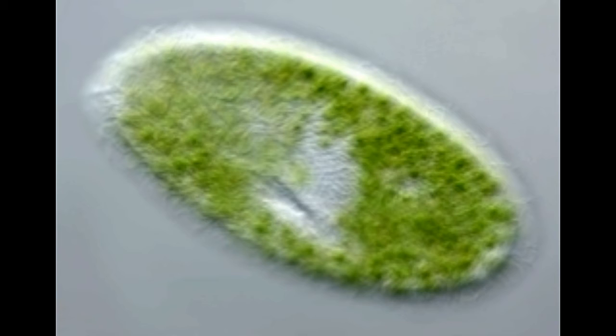Paramecia are oval, slipper-shaped, and unicellular organisms, and are commonly found in freshwater environments. Their body is slender and roughly cylindrical, with a thick and pointed posterior end and a blunt or rounded anterior end.